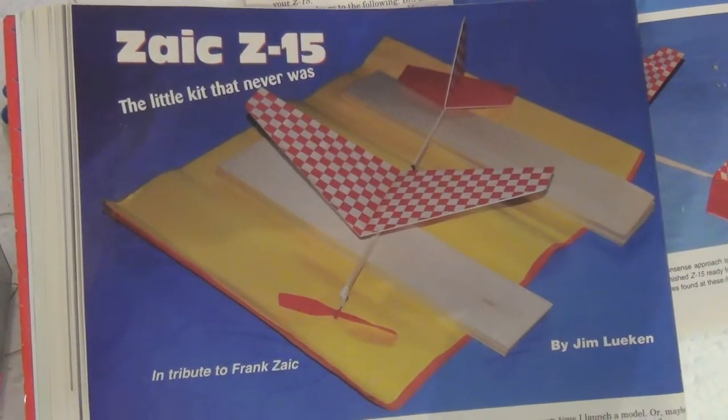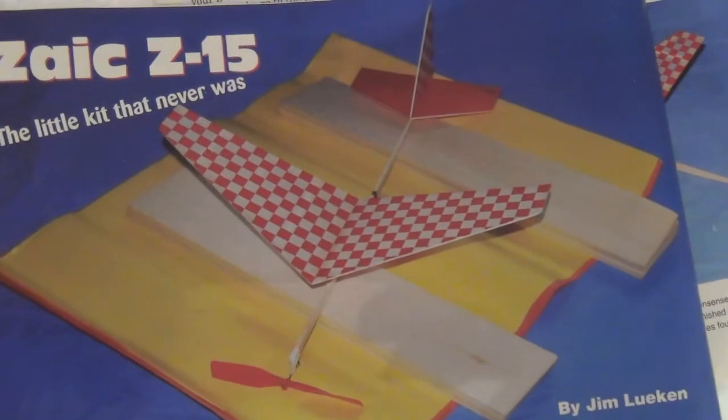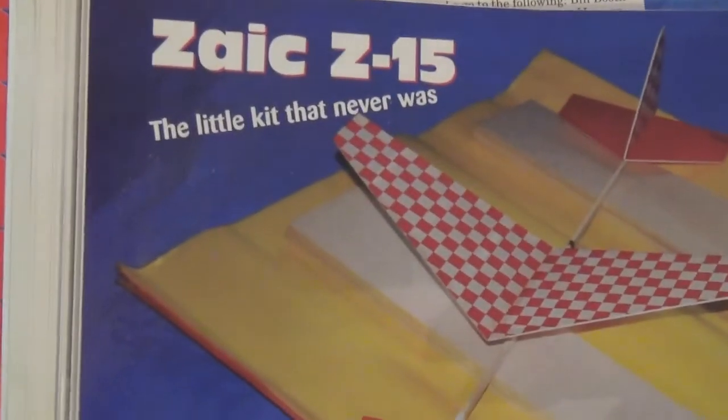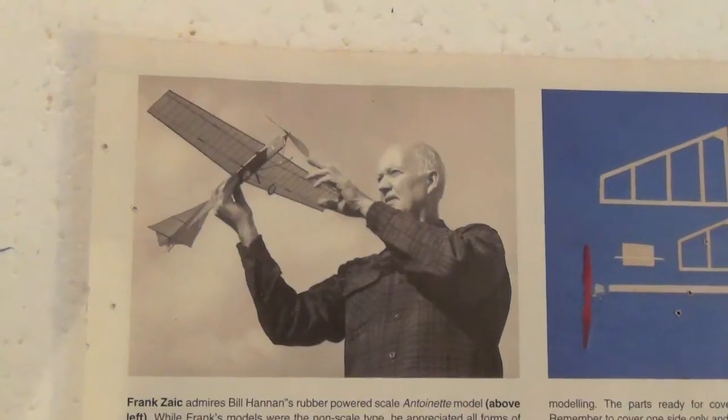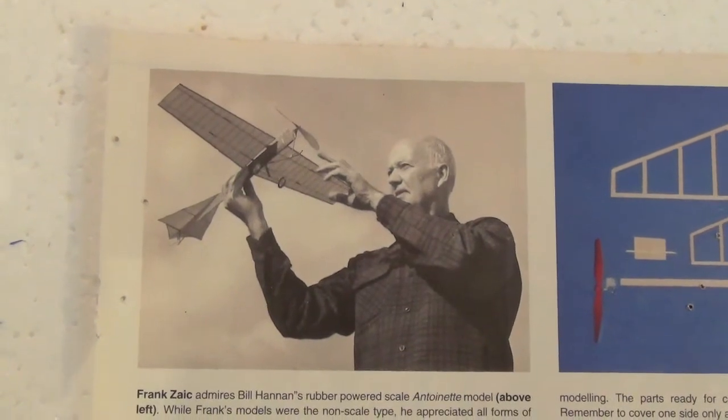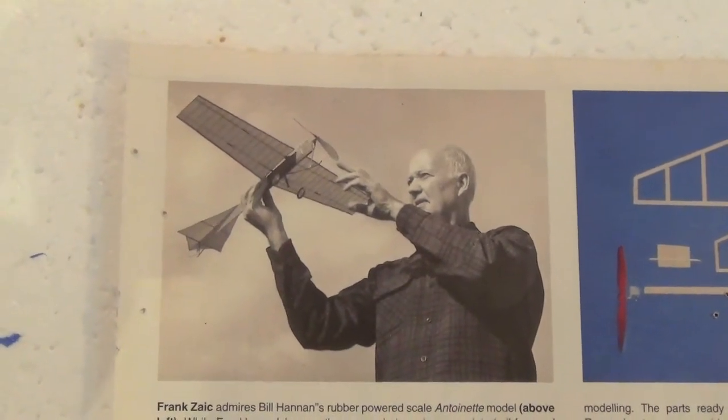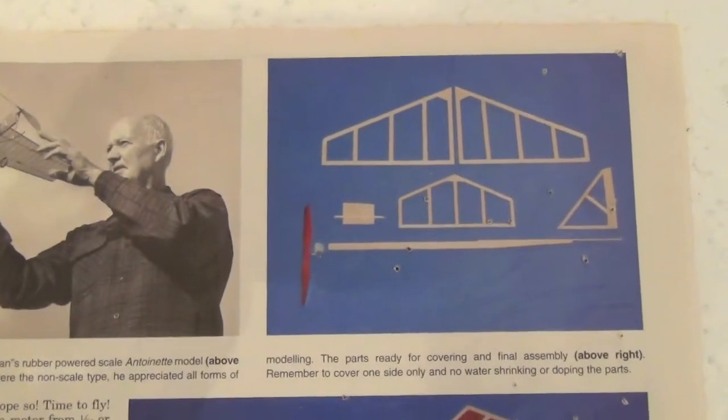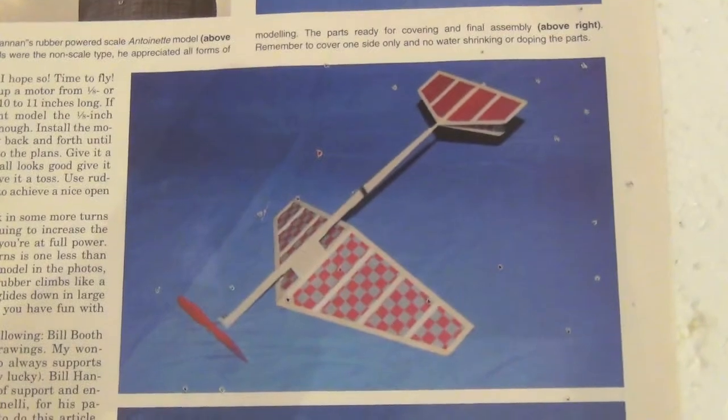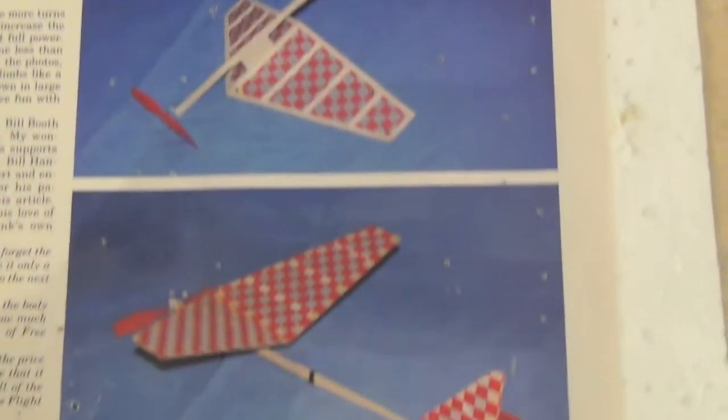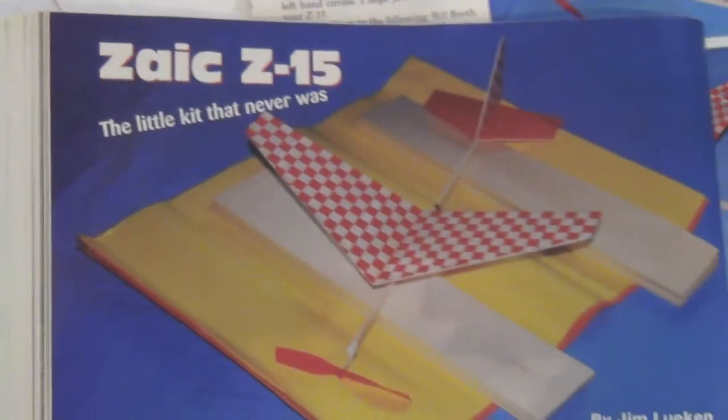The Z15, because it was approximately 15 inches in wingspan. And as it says, the little kit that never was. This was originally designed by the legendary Frank Zake. Seeing him here with a different model, Frank Zake got a couple of boys to make a prototype.